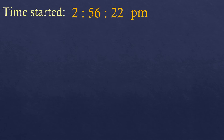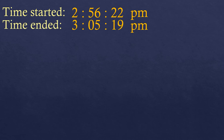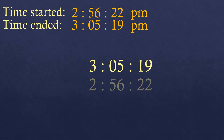For another example, we have time started at 2:56:22 in the afternoon and time ended at 3:05:19 in the afternoon as well. We're going to subtract them to find the elapsed time.